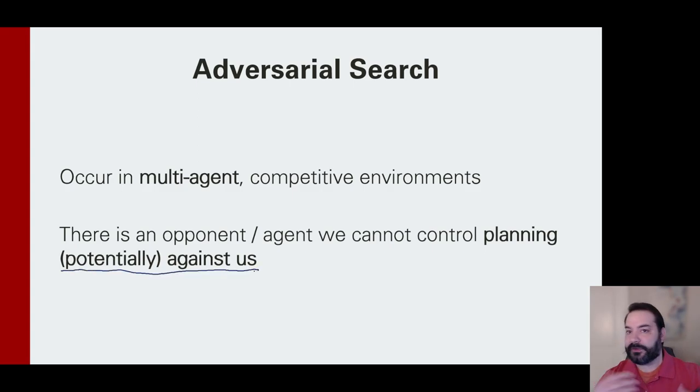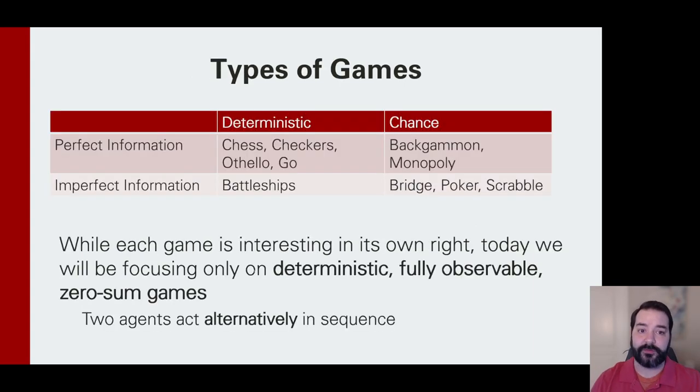And specifically, we have to think about this idea that they may be working against us. They're potentially looking at their own goals that they want to work through. And some good ideas, some ways to see this are through different types of games. Specifically, we can start to model these in different terminologies. We have the ones that we typically see inside of an AI course, the deterministic perfect information type exercises.